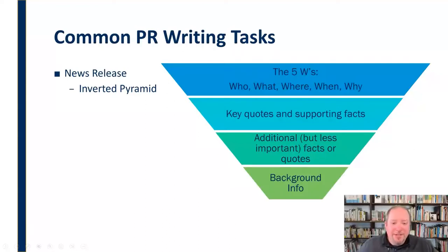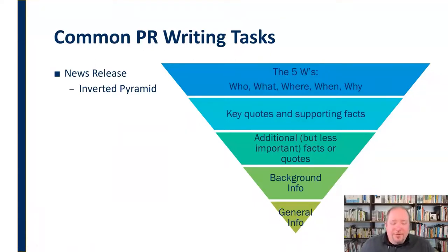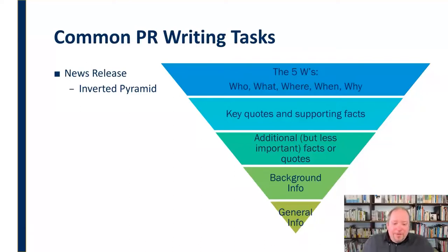You can also provide some background information — what led up to this situation in general — and any kind of additional information related to that. Finally, some general information about your organization and where they can contact you for further details. This is what we call the inverted pyramid: the five W's start the news release, you layer in additional details, and then finally some background and general information for follow-up.